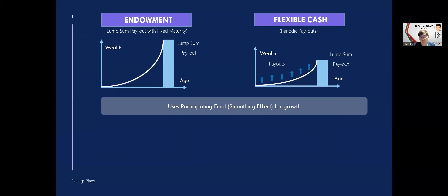For example, if the target growth of the savings plan is 4.25%, let's say on a good year they make 8.25% — they will keep back 4%. In a year of lower returns, maybe 2%, then they will take out from the 4% they have kept and give it back to you at about 2% or so. So that is how participating funds work, and it really depends on the management of each insurer. Different insurers have different participating funds, so do keep a lookout for the published returns for a good comparison of which insurer has better participating fund returns.